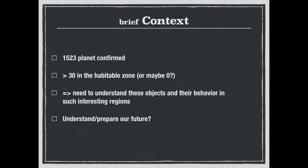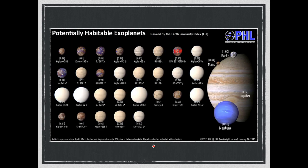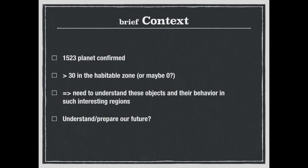Among these objects, more than 30 are believed to be in the habitable zone, or maybe not, in a bunch of very different configurations of size and radius. Yes, this is a famous picture. So we need to understand these objects and their behavior in such interesting regions, that is the habitable zone, as well as to characterize their atmospheric composition in order to understand and prepare our futures.